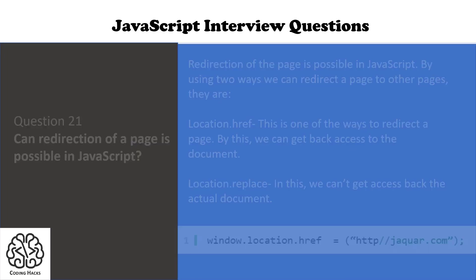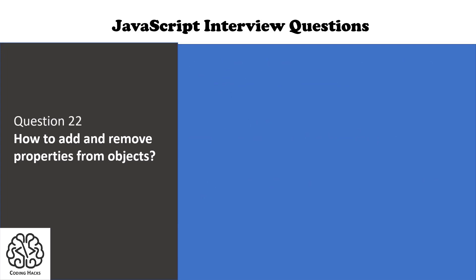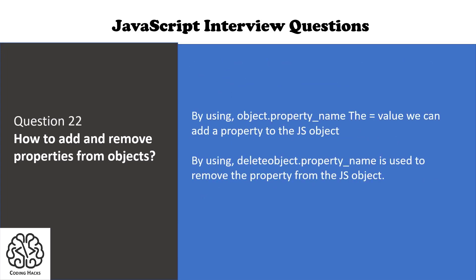The next question is: how can you remove and add properties from an object? By using object.propertyName = value, we can add a property to a JavaScript object. Whereas by using delete object.propertyName, we can remove the property from the JavaScript object. We have already studied the delete method to delete a property from an object.